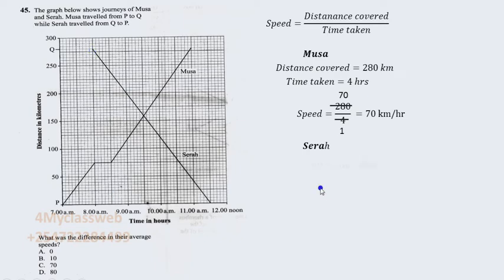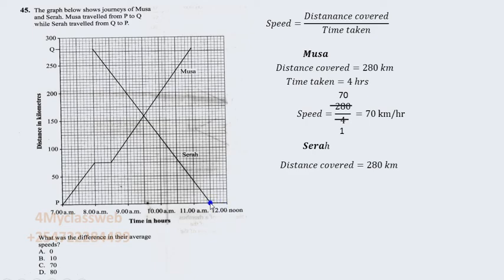The distance from Q to P is 280 kilometers. Seller started her journey at exactly 8 a.m. and ended at 11:30 a.m. — because that point is between 11 and 12. Counting the time from 8: one hour, two hours, three and a half hours. Therefore Seller spent 3.5 hours traveling from point Q to point P.